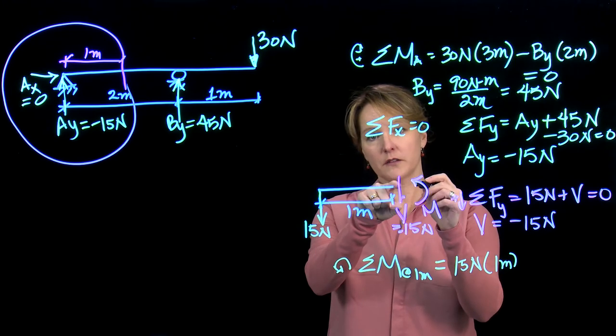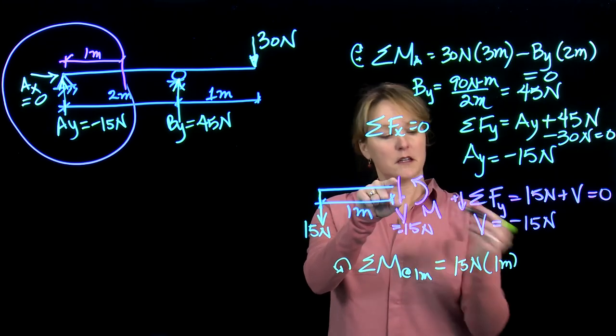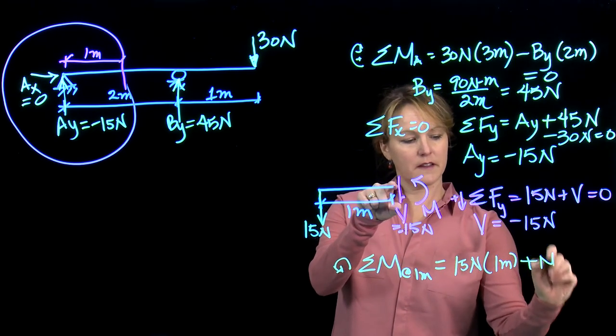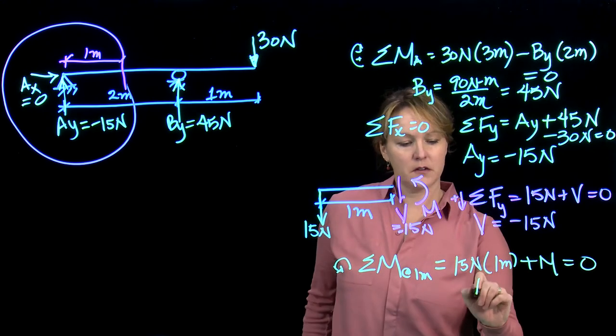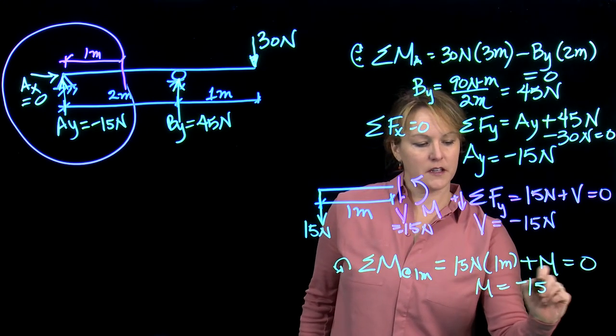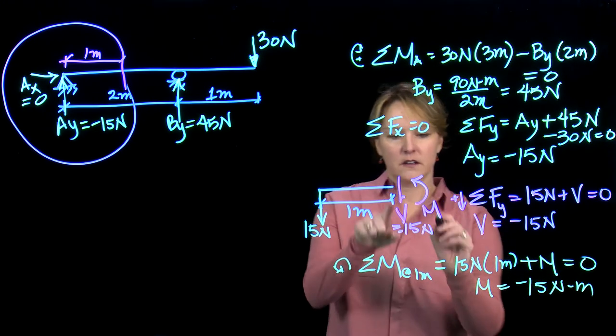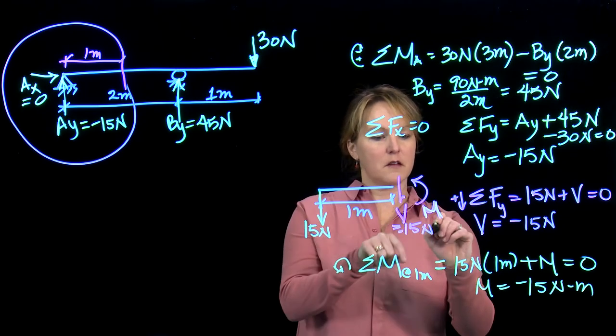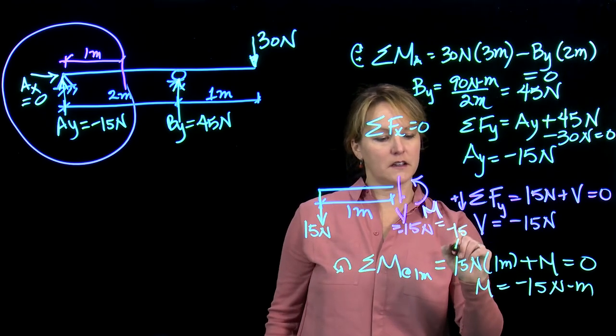The moment is always going to be trying to cause a rotation because it's internal—it's pushing and pulling. So I add in that moment, equals 0. My moment is negative 15 newton meters. So at this location, M is negative 15 newton meters.